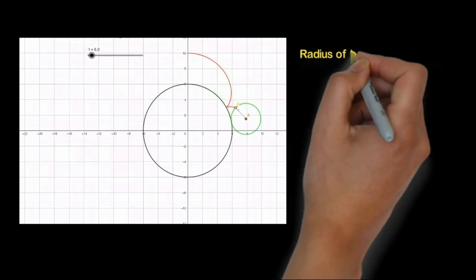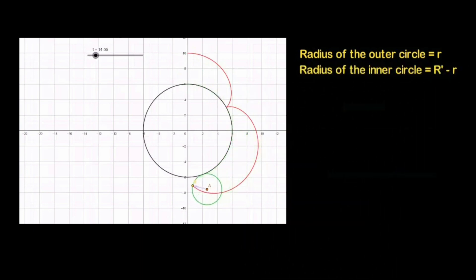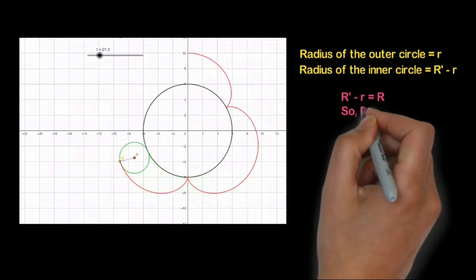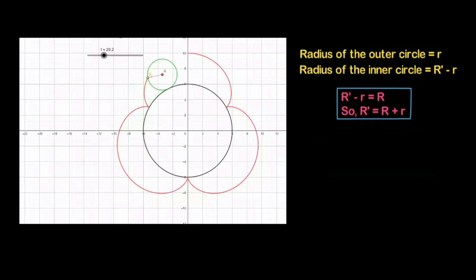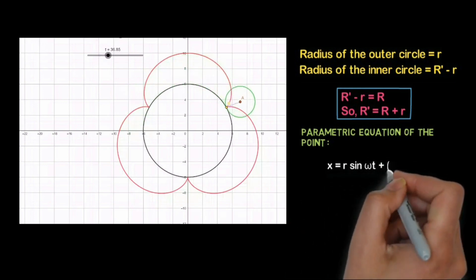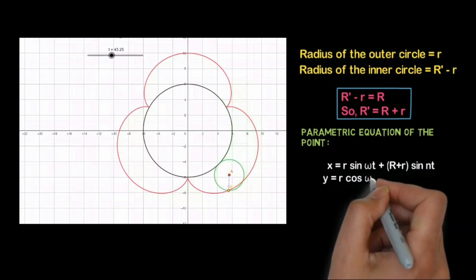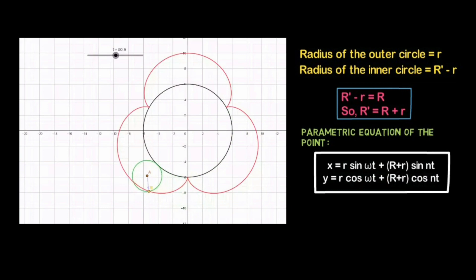The radius of the outer circle stays small r, while the radius of the inner circle becomes capital R-dash minus small r. So capital R-dash minus small r equals capital R, meaning capital R-dash equals capital R plus small r. Substituting this into our equation gives: small r sin(omega t) plus (capital R plus small r) sin(nt), small r cos(omega t) plus (capital R plus small r) cos(nt). This is the equation of the striking epicycloid shape unfolding before our eyes.